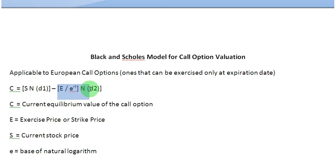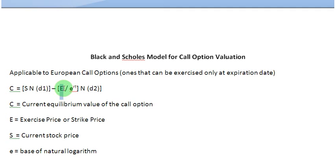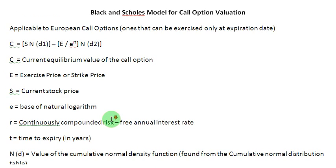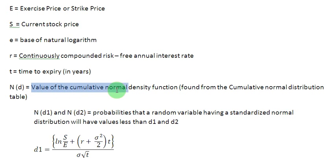In the second square bracket, again we have a product of two numbers. The first number is simply the present value of the exercise price — this capital letter E stands for the exercise price — and you will realize that we have discounted this exercise price by using continuous discounting, and then we have multiplied it by N of D2. Now, what is this N of D? N of D stands for the value of the cumulative normal density function, which we can find out from the cumulative normal distribution table.